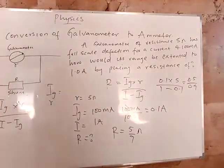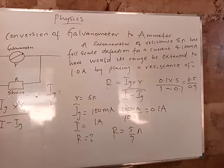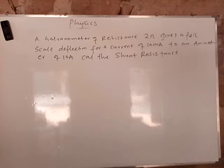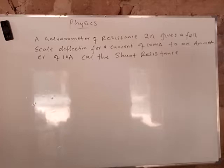I'm going to solve one more example on this and that should do it. We have a second example: a galvanometer of resistance 2 ohms gives a full scale deflection for a current of 10 milliamperes, to be converted to an ammeter of 10 amperes. Calculate the shunt resistance.